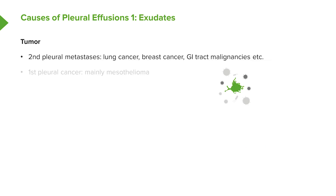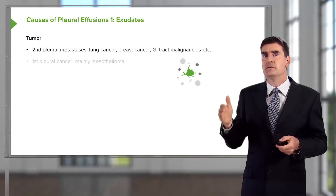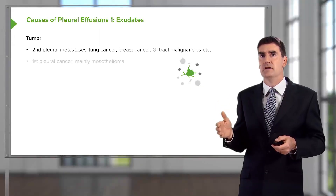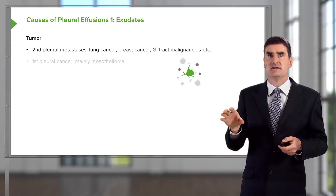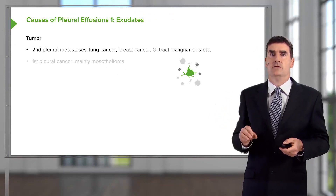Exudates, in contrast, are due to abnormalities of the pleura. These occur in tumors — usually secondary pleural metastasis, either from lung cancer, breast cancer, or GI tract malignancies. Multiple different types of cancers can spread to the pleura to cause pleural effusions, and the presence of a pleural effusion in somebody with a known malignancy is very suggestive that they're going to have metastatic disease affecting the pleura.